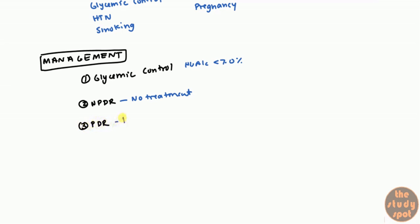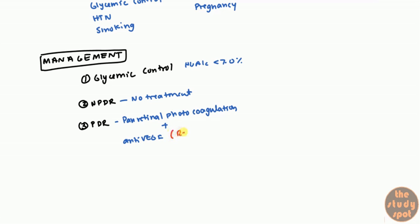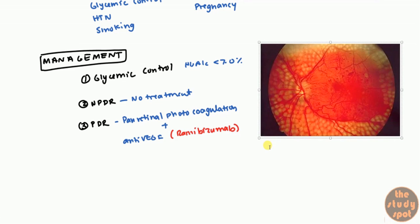When it becomes proliferative, you can give panretinal photocoagulation — a laser that shoots into the eye — which helps prevent the retina from detaching due to the traction mentioned earlier. You also want to give anti-VEGF, known as ranibizumab. The reason is you want to stop producing those new vessels so they stop leading to hemorrhages and all those issues.